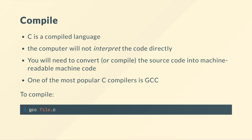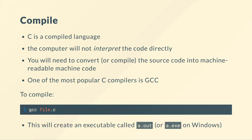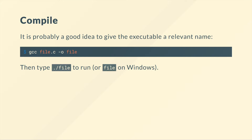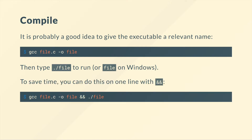It's very simple to compile. In your terminal, you just type GCC and then the file name — and you should always give your C files the ending .c so you know it's a C file. This creates an executable called a.out, or a.exe on Windows. If you have many files, you don't want them all called a.out, so we use the -o option to specify the output file name. Then you type ./file to run it, or just file on Windows. To save time, you can do this in one line with &&, which is a Unix trick meaning if the first command was successful, the second will run.